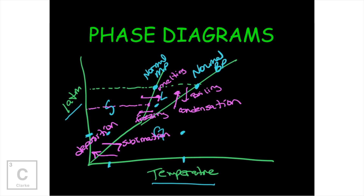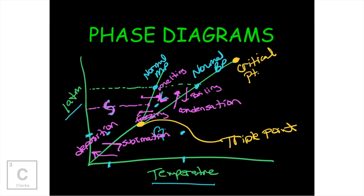A lot of times teachers will give you points and say you're going from here to here — what phase change happened? Basically, you just have to remember that this portion is a solid, this is our liquid, this is our gas. There are a couple of other important points on this graph. This point here, where all three meet, is called the triple point — you can manipulate the pressure and the temperature to have all three phases present at once. And then there's the critical point, where the line starts to blur between liquids and gases — that's where you get really unstable states of matter.